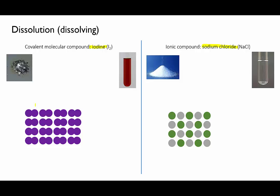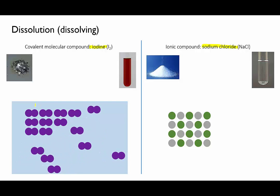Sodium chloride dissolved in water makes a colourless solution. At the molecular ionic level again, when a molecular compound like iodine dissolves in water, the individual molecules separate from each other and spread out through the water. Notice that I'm not showing the individual water molecules here, we're just assuming that they're there.